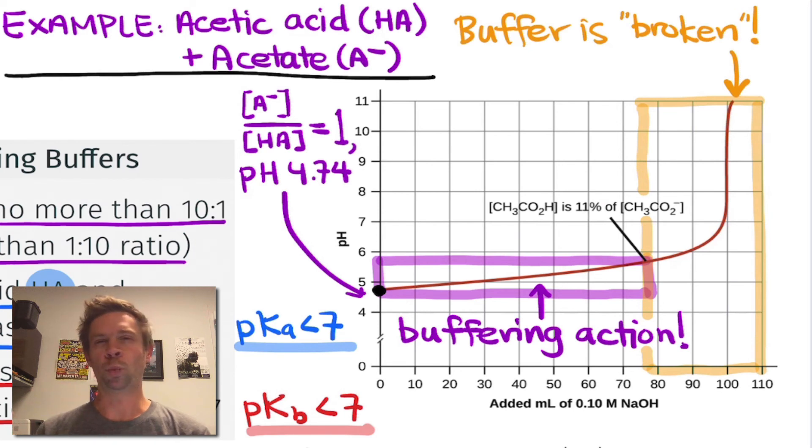It essentially means that once our ratio of HA to A⁻ is less than 0.1, then we've essentially broken the buffer. We're in this orange highlighted region at that point. This applies regardless of the identity of the weak acid and conjugate base. It's a general principle for buffers.